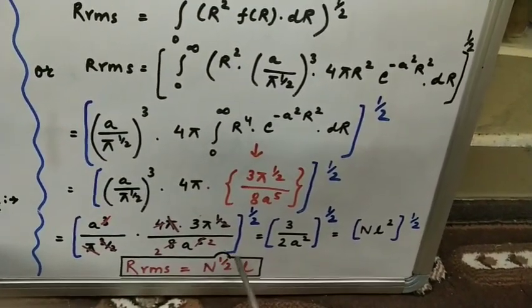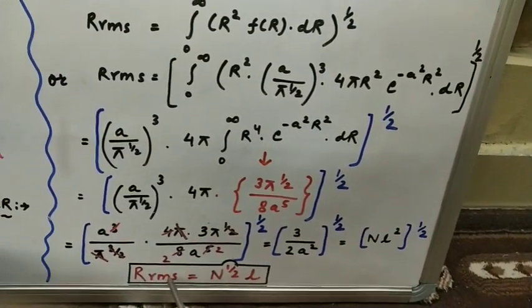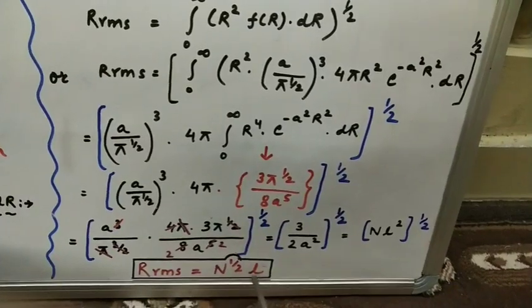So finally we can calculate what is RRMS. That is your root mean square end to end distance of the chain. It is equivalent to N to the power half times NL.